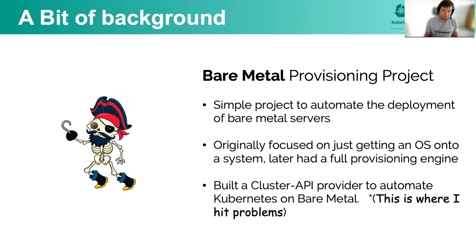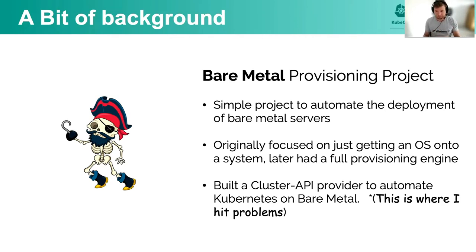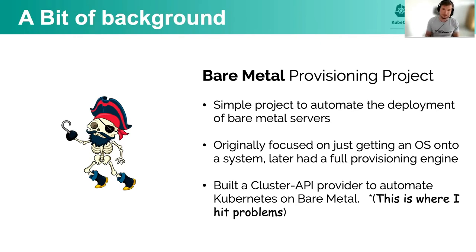It was quite a simple project to automate the deployment of bare metal servers — it would typically stand up the operating system. Once I got that automated, it later developed into a provisioning engine to not only stand up the operating system, but then to stand up the Kubernetes clusters on top of it. I then started to build a CAPI — a cluster API provider — to automate the entire end-to-end platform. This is typically where I started to hit a number of problems, mainly around the lifecycle and making these clusters production ready.